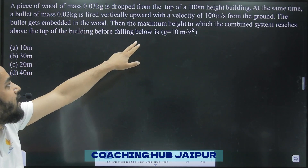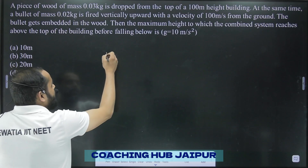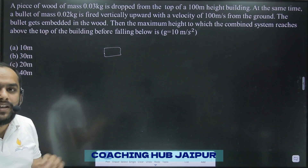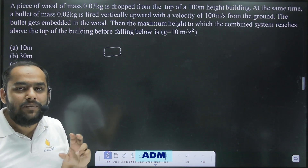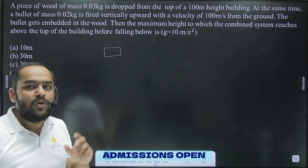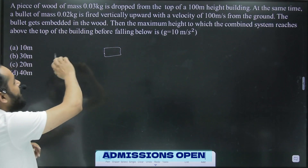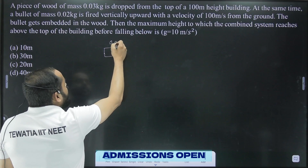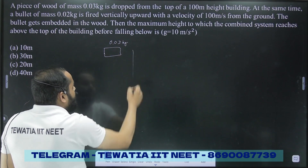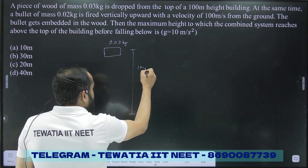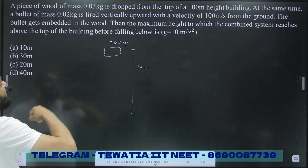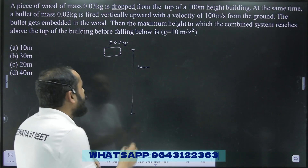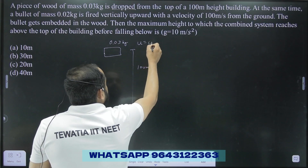A piece of wood of mass 0.03 kg is dropped from the top of a 100 meter height building. From the first line we can visualize the question. My second tip is to always visualize the question in physics. We can see there's a piece of wood with mass 0.03 kg dropped from a 100 meter high building. The word 'dropped' tells us the initial velocity u of this mass is zero.